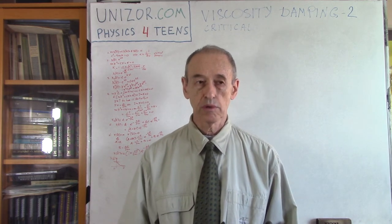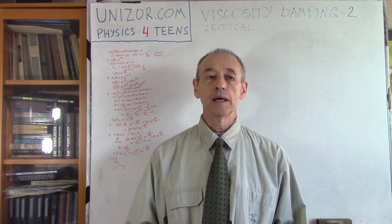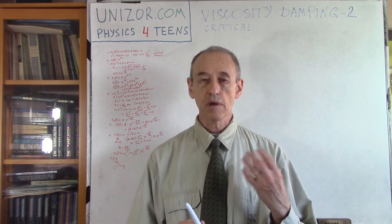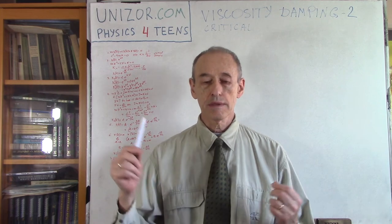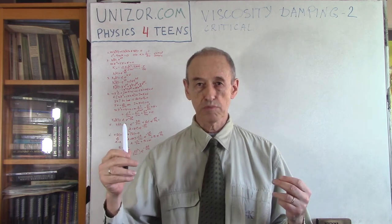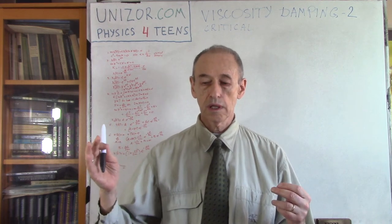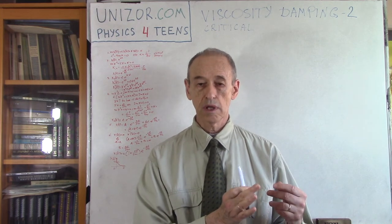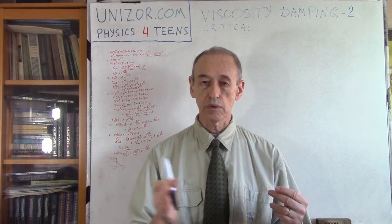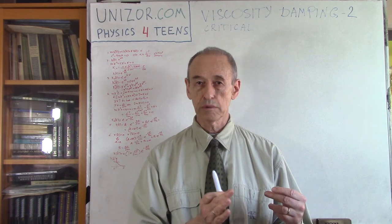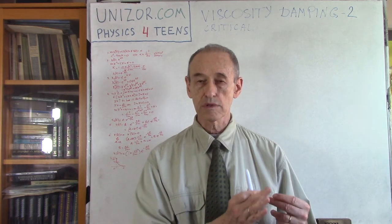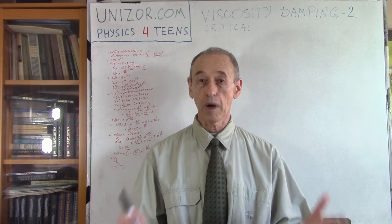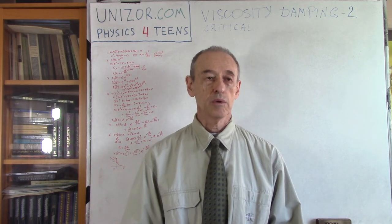The previous lecture was also about viscosity, but in that case we were talking about so-called over-damping, when viscosity is so high that the object, after we stretch the spring and let it go, will start moving towards the neutral position but will never reach it and never cross it. There is no oscillation — it will just slow down, moving slower and slower towards the neutral position, never reaching it. This is our ideal model.